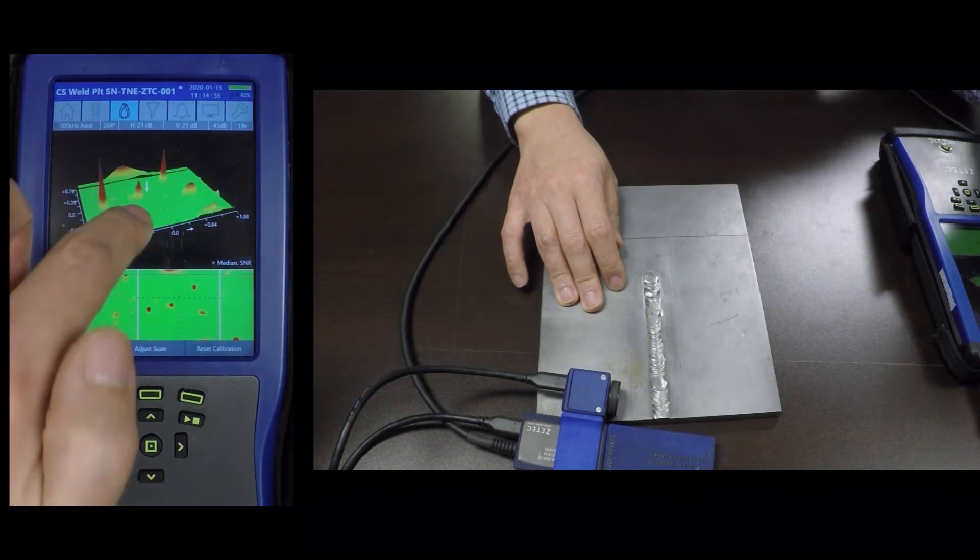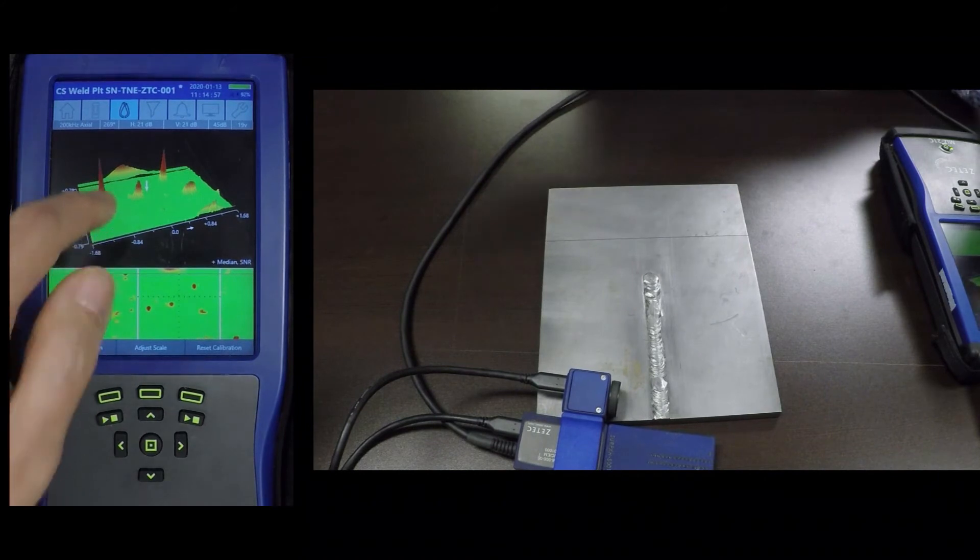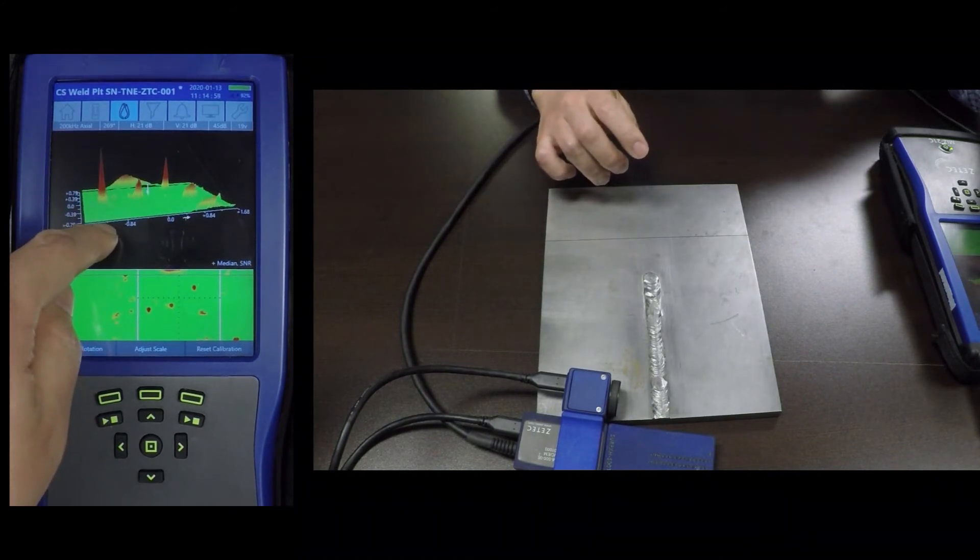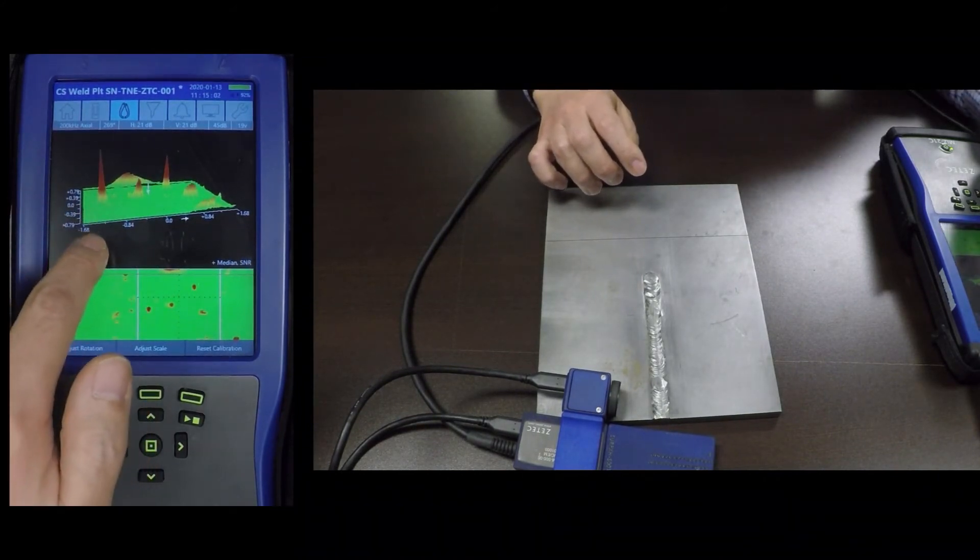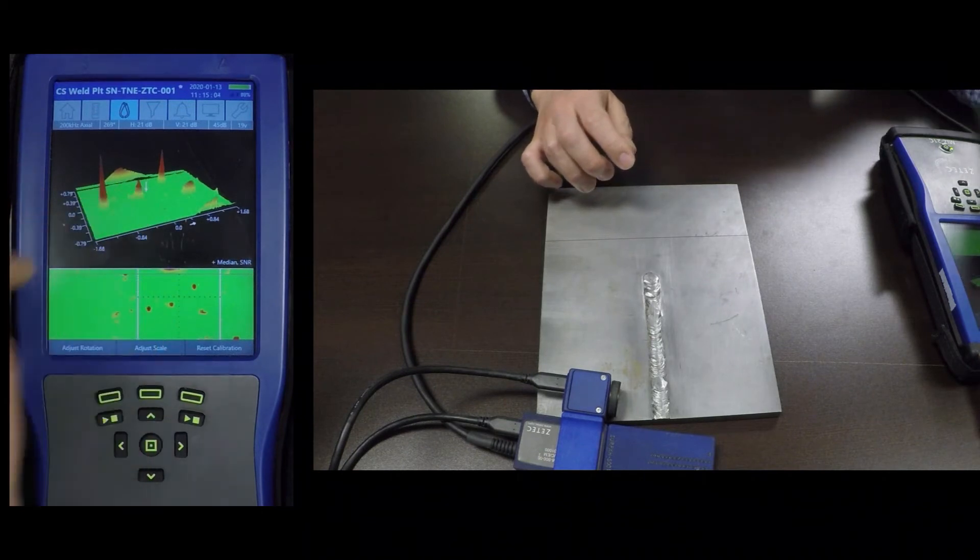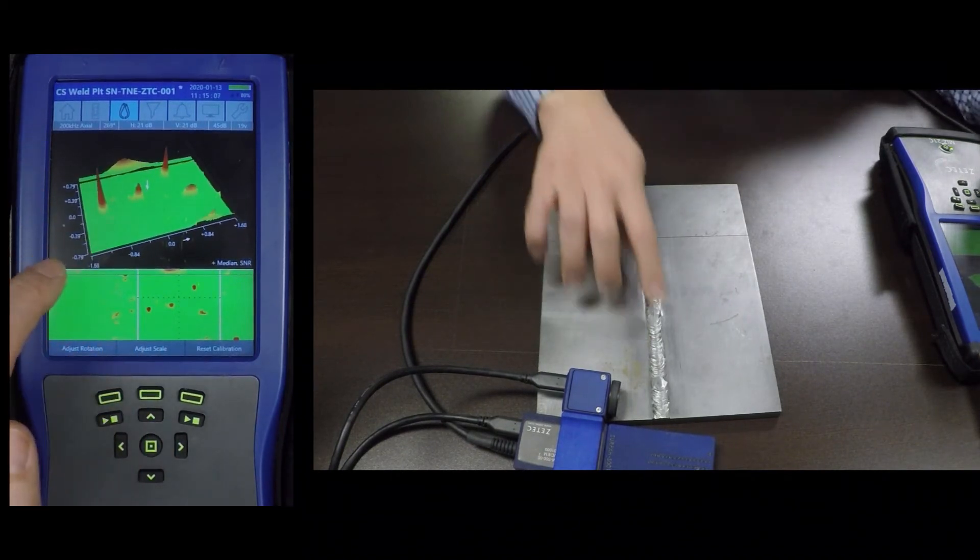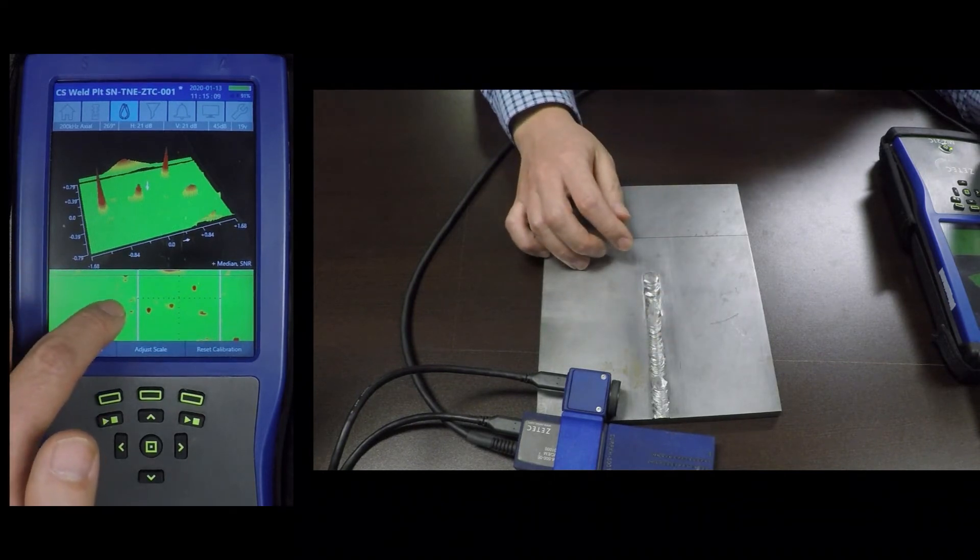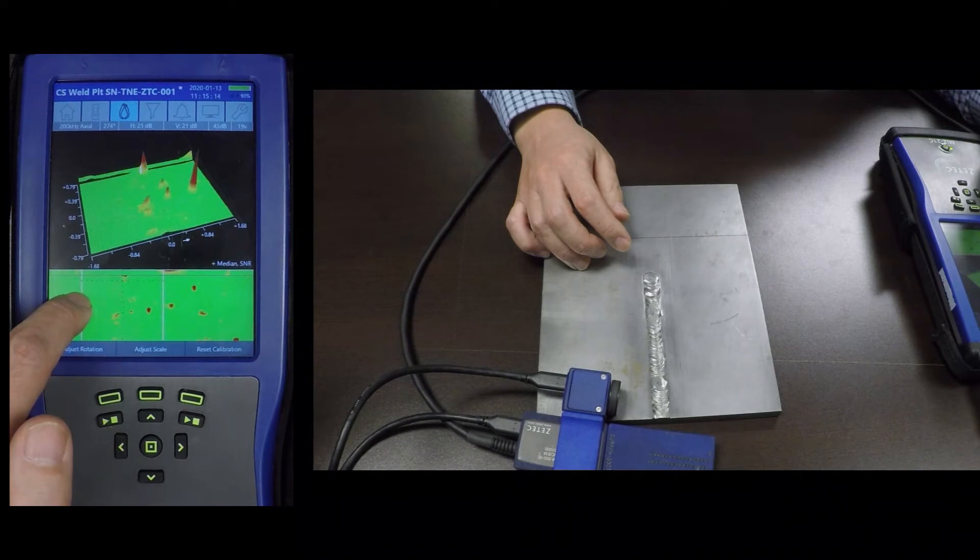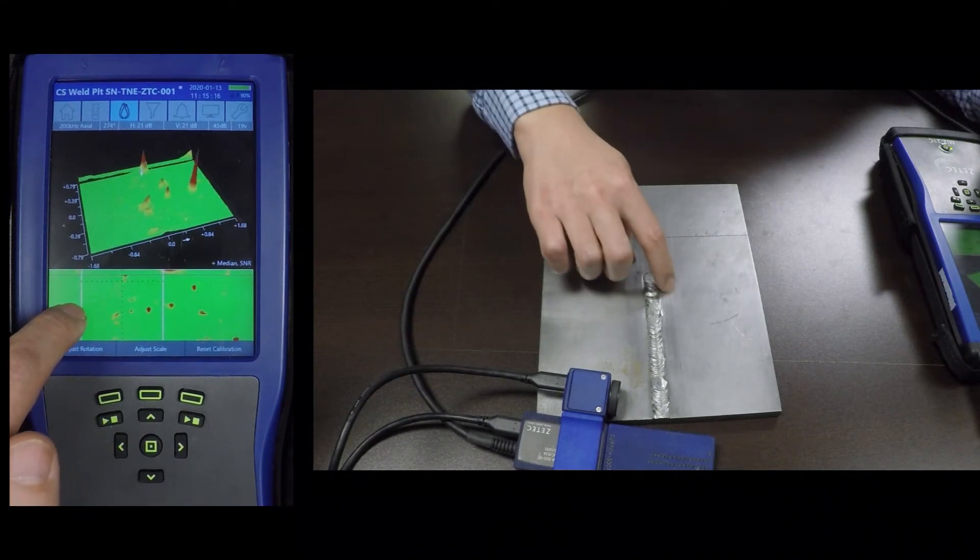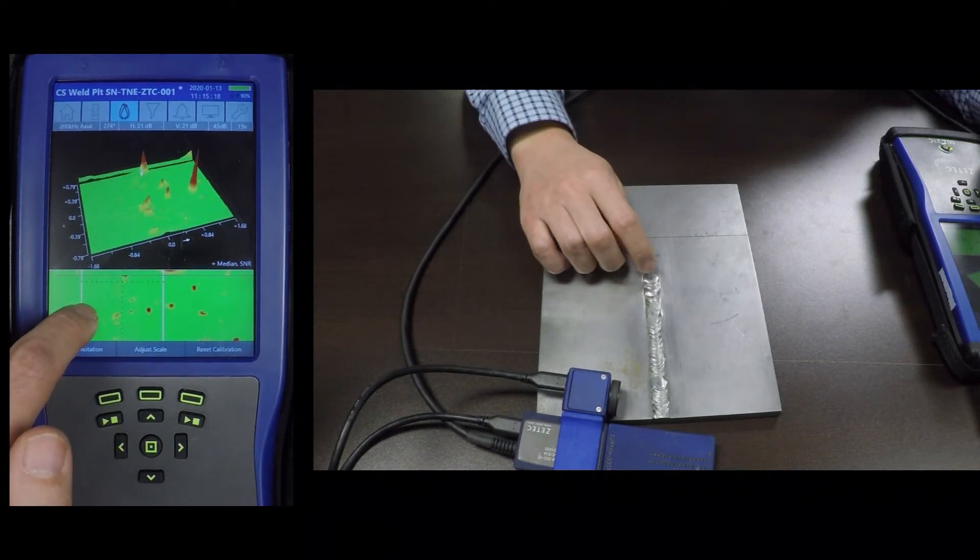And you can see for the axial notches, it's more evident that you can possibly miss the one in the toe area. And then this signal right here, that's the 45 degree EDM notch.